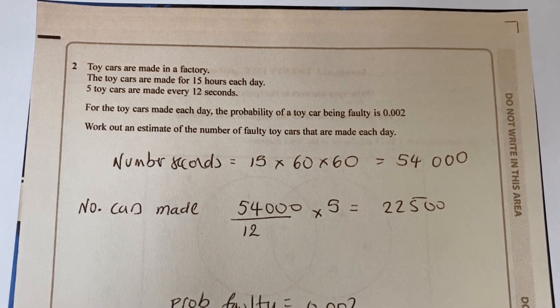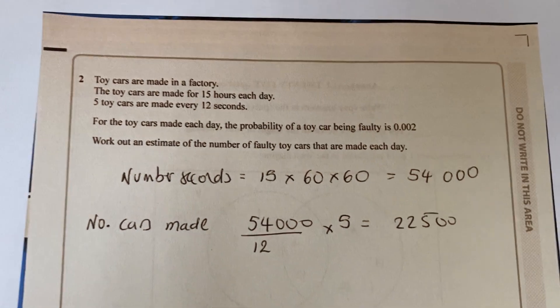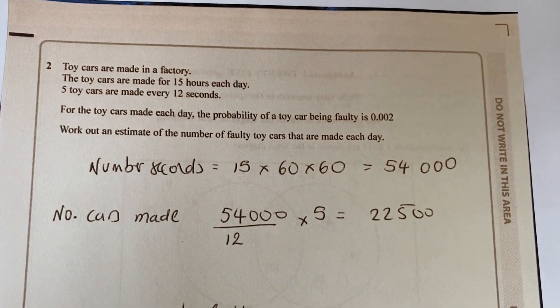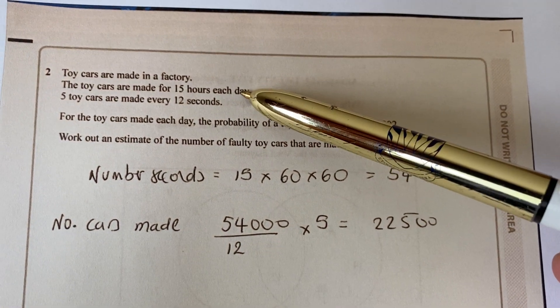Okay, question number two. We need to work out how many cars are made first of all. So we're given a time period of 15 hours.